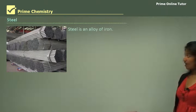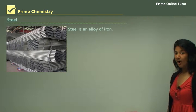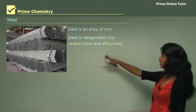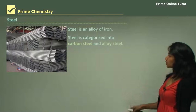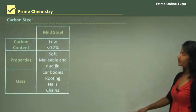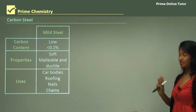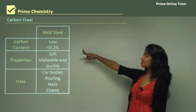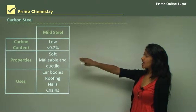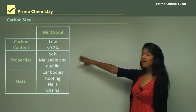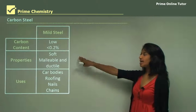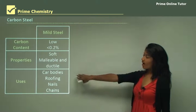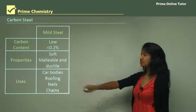Steel is also another alloy and it's an alloy of iron. Steel is categorized into two: carbon steel and alloy steel. Carbon steel has three main types. There is mild steel, which has a low carbon content of less than 0.2%. It is soft, malleable, and ductile due to its low carbon content. Its uses are car bodies, roofing, nails, and chains.